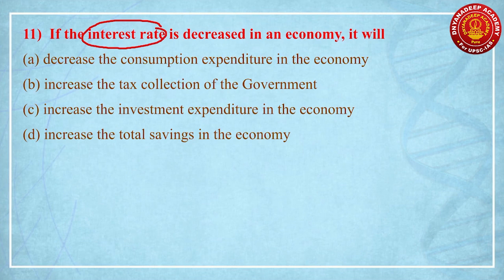First option says it decreases consumption expenditure in the economy — that is wrong. If I am getting a loan at a cheaper rate with lower interest, I will increase my consumption. For example, if I am getting a loan for purchasing a car and the interest is lower, I will definitely purchase the car. So the first option is wrong.